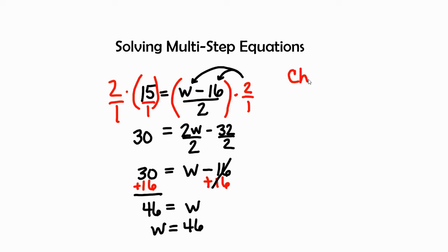Let's go ahead and check our work. So when we rewrite this equation, I have 15 equals—and wherever I see the letter, the variable w, I'm going to put a parenthesis because I'm going to substitute this 46 in there—all over 2. So let's go ahead and insert the 46.